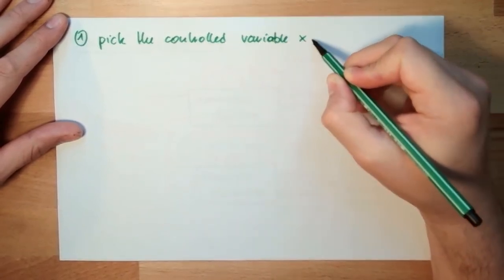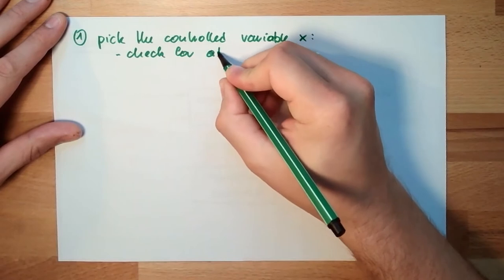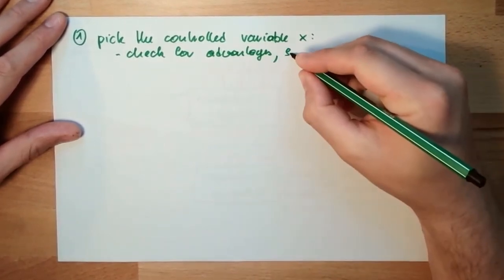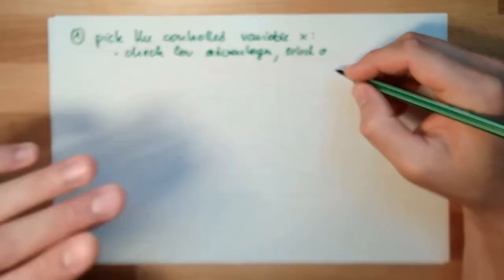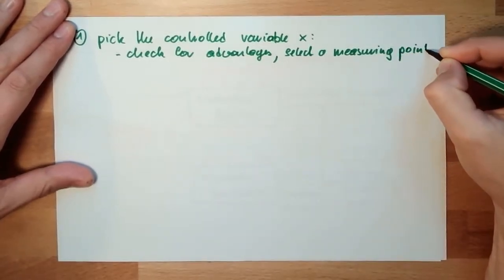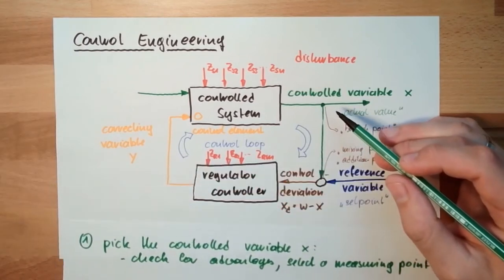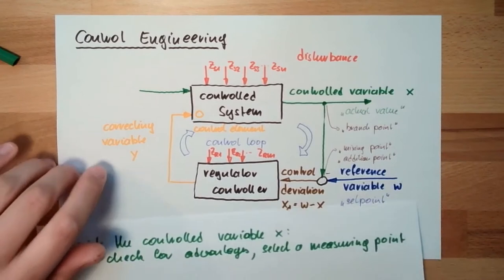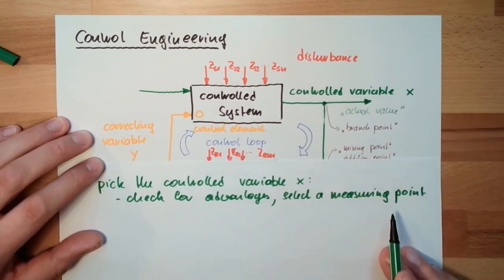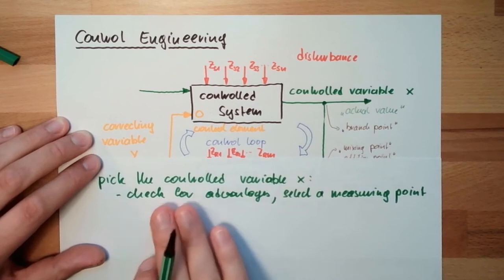So the first thing is: pick the controlled variable X, and check for advantages. Then we select a suitable measuring point. This is quite important because I have to measure the control variable. If I'm not able to find a suitable measuring point, then I can forget the whole thing. If I can select the measuring point, then my control variable is fixed.